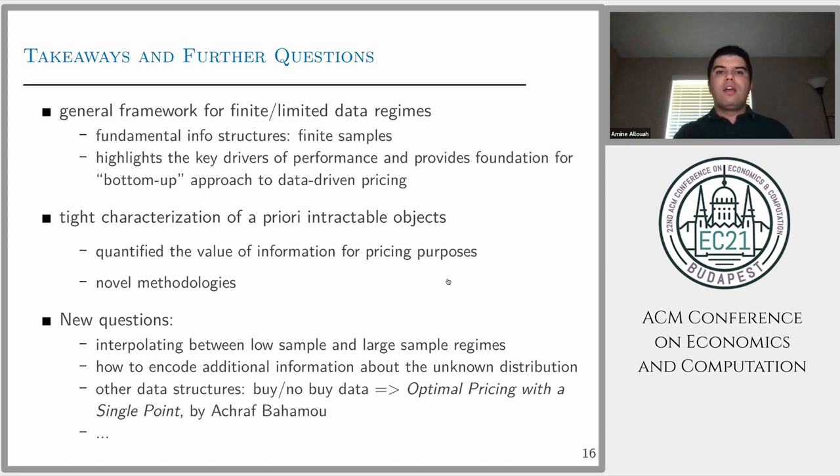How do we do that? Through a tight characterization of a priori intractable objects. But this also raises new questions. As mentioned, one question is how can we interpolate between this low and large sample regime. Another question is is there a way to show impossibility results? Here we showed only feasibility results. Another important question is how can we encode additional information, for example buy or not buy decisions. We have another paper that will be presented in EC about the optimal pricing when we only observe the buy and no buy decision. Thank you very much.